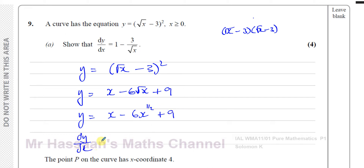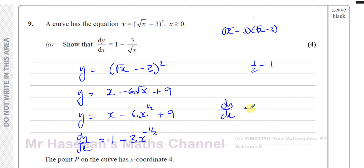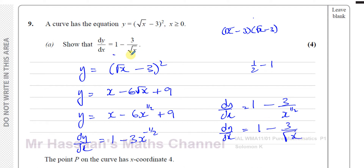So dy/dx: differentiating x gives 1; then multiply the power by the coefficient — (1/2) × 6 = 3 — and reduce the power by 1, so (1/2) − 1 = −1/2, giving −3x^(−1/2); the constant differentiates to 0. Writing this back in the original form: dy/dx = 1 − 3/x^(1/2), which is 1 minus 3 over √x, as required.